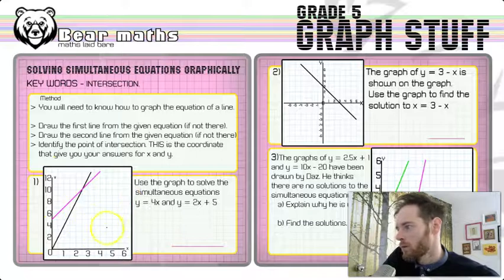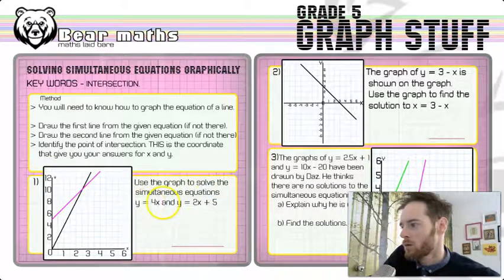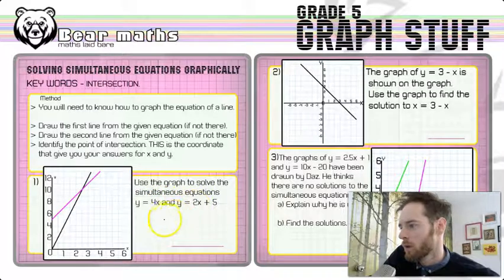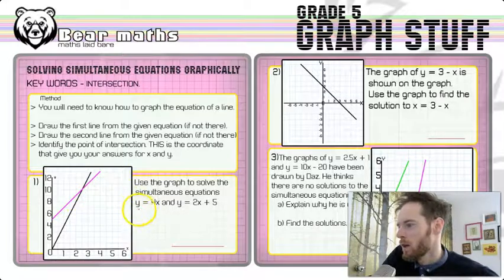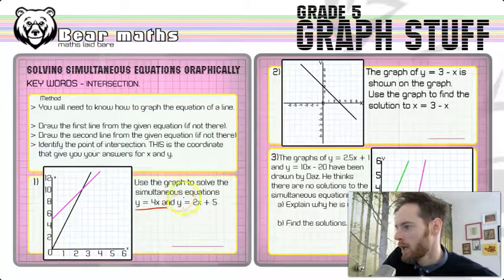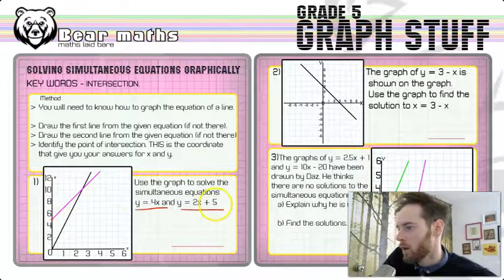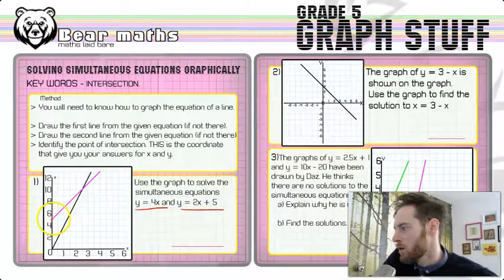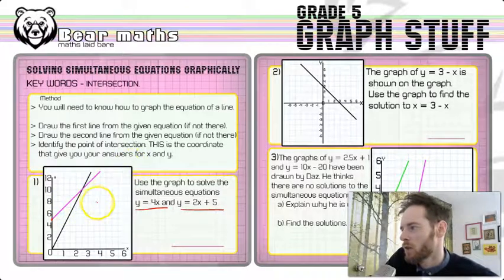Now what we're going to do in the first question is very simple. Use the graph to solve simultaneous equations y equals 4x and y equals 2x plus 5. Now you might have to identify which one's which, you don't really need to in this particular question, but y equals 4x is the black line, and y equals 2x plus 5 is the purple line. And I know that because I can see that y equals 2x plus 5, the purple one, goes through 0, 5 on the y-axis. That's all I really need to know in order to decide which one's which.